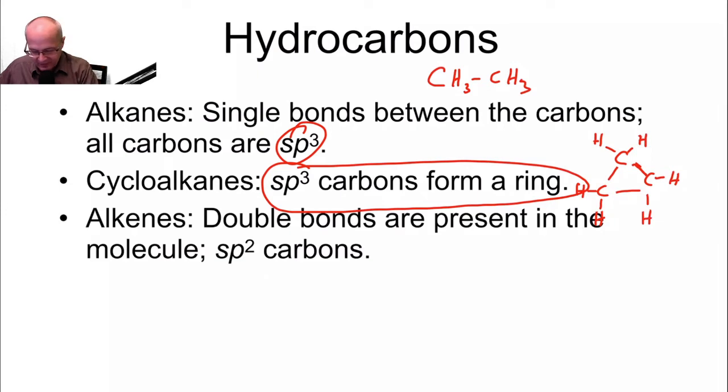Alkenes, they have sp2 carbons. So, look for a double bond. Carbon, carbon, double bond. There you go. Alkene. That's an alkene. Carbon-to-carbon double bond.